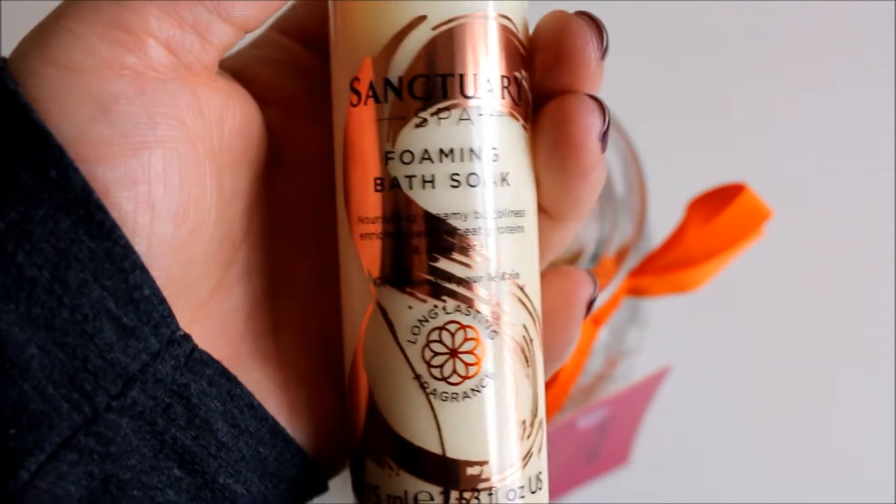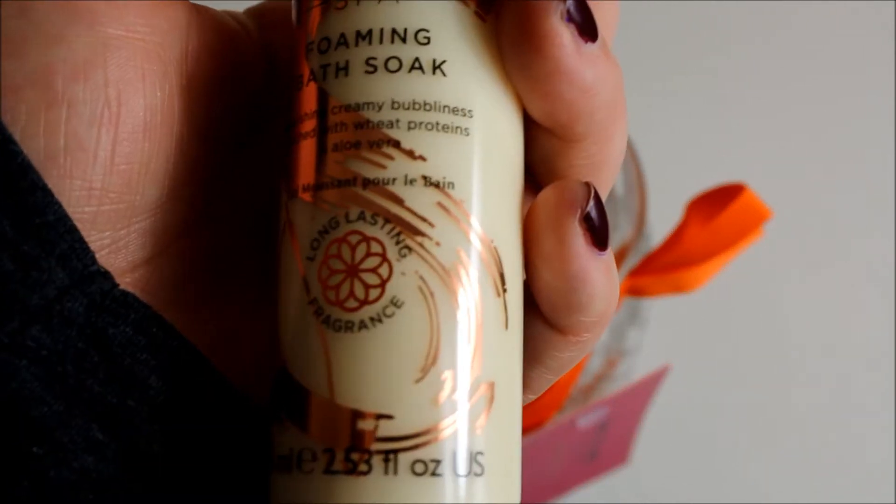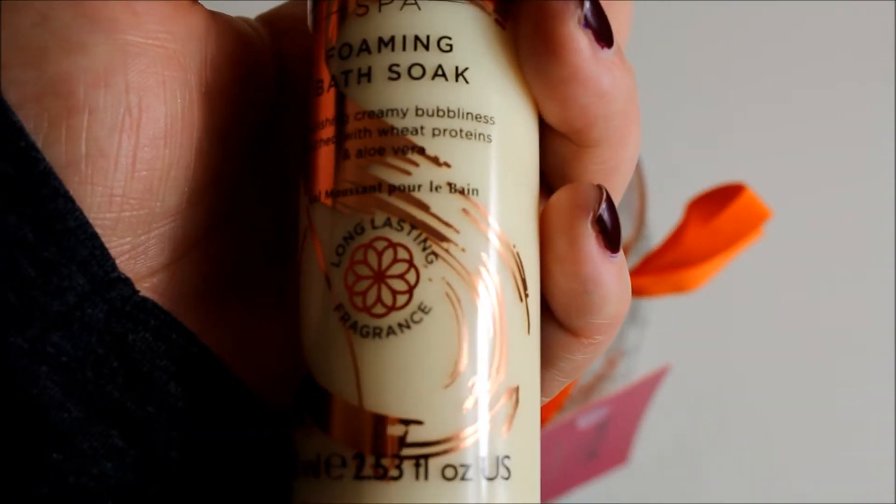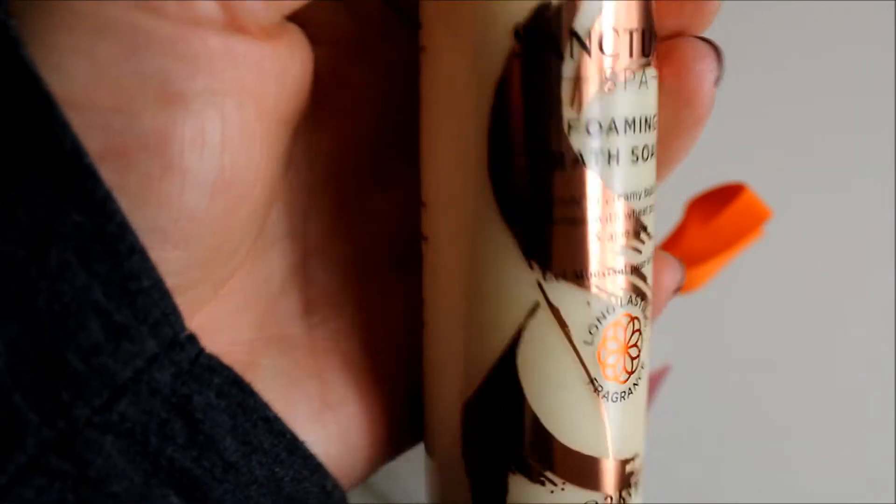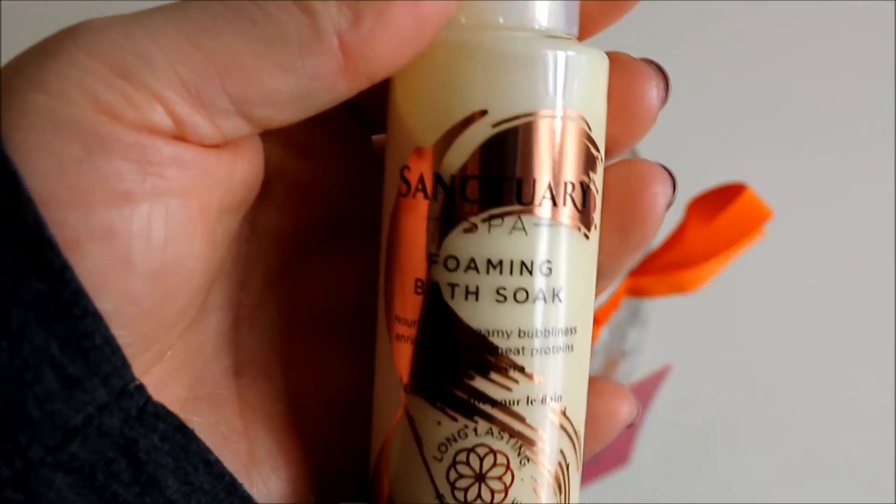The next item is an item I've never tried. It's the Sanctuary Foaming Bath Soak. Nourishing Creamy Bubbliness Enriched with Wheat Proteins and Aloe Vera. Sounds really nice so I'm going to put that in the bathroom and I love the rose gold on it.